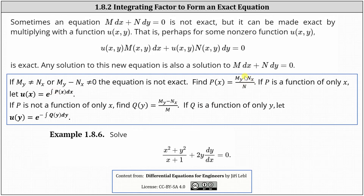If this quotient is not a function of only x, then we take the difference of the first-order partial derivatives and divide by M instead. If this is a function of only y, we call it q(y), and the integrating factor is u(y) = e to the power of the negative integral of q(y) dy. So to summarize: verify the equation is not exact, divide the difference of partials by N — if it's a function of only x, use u(x); otherwise divide by M, and if it's a function of only y, use u(y).